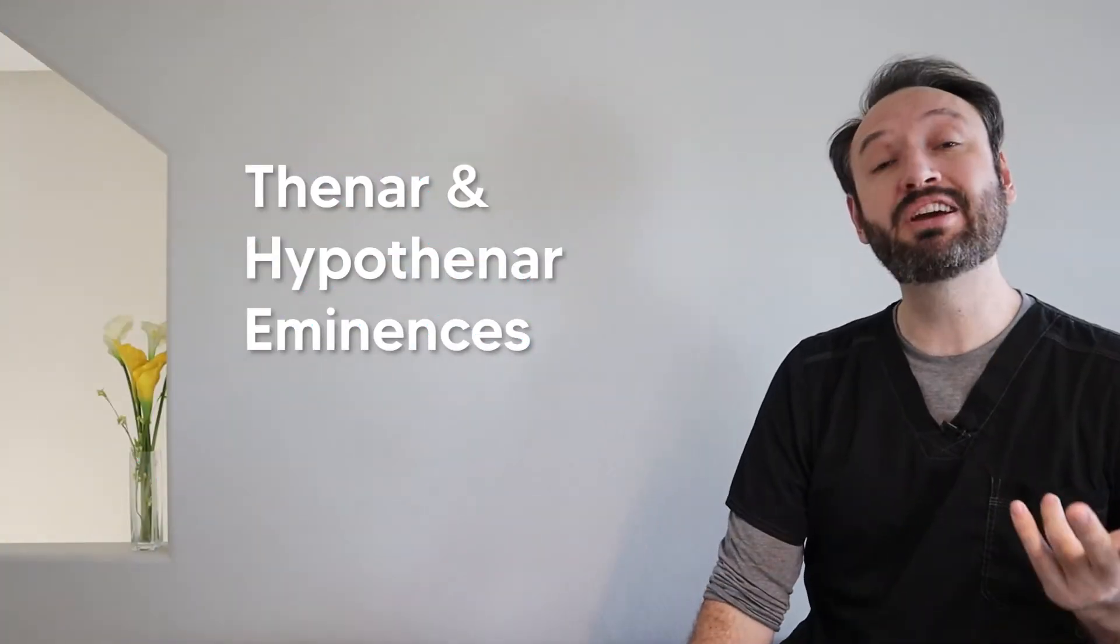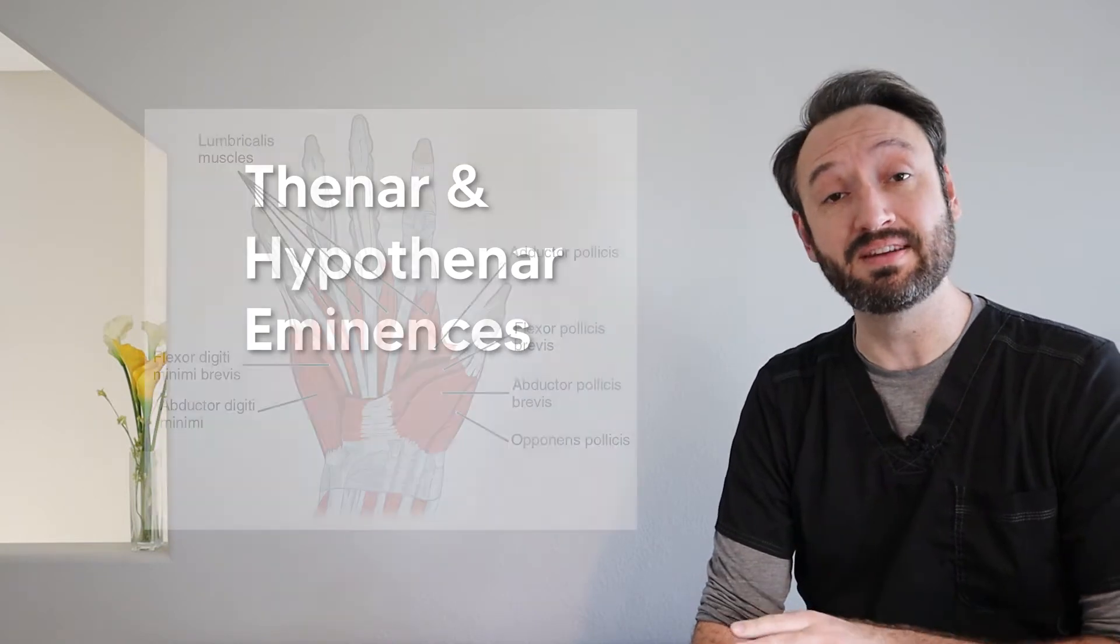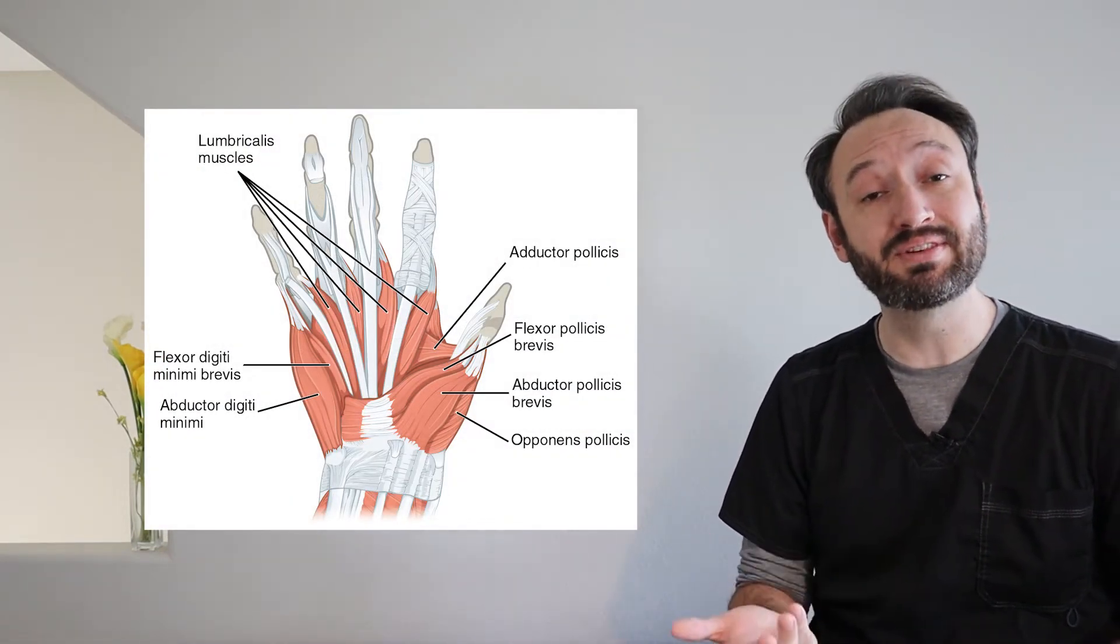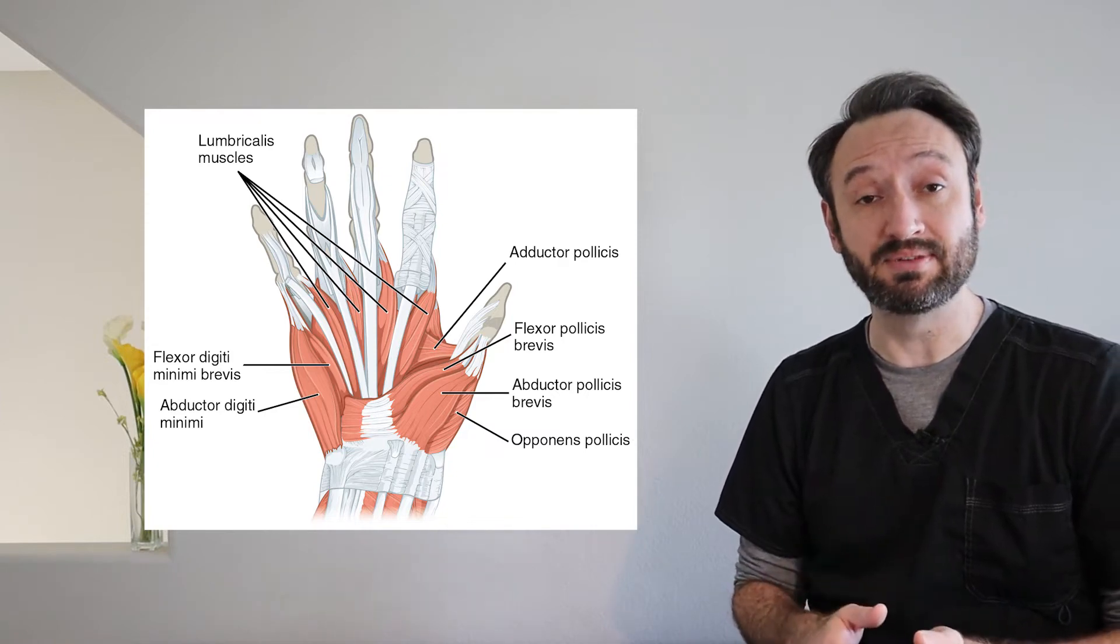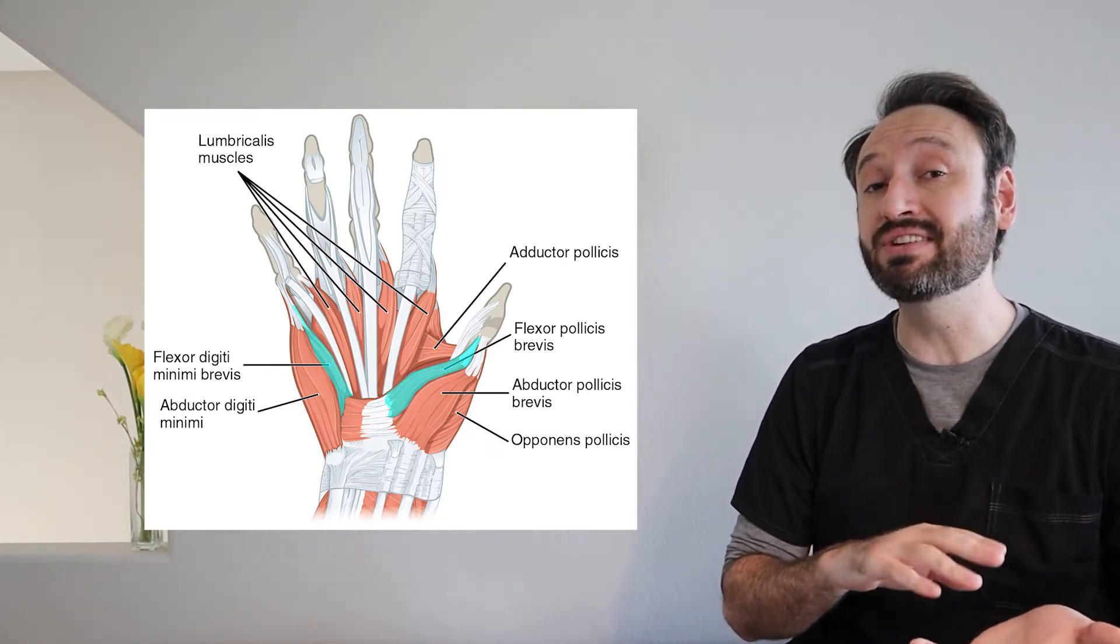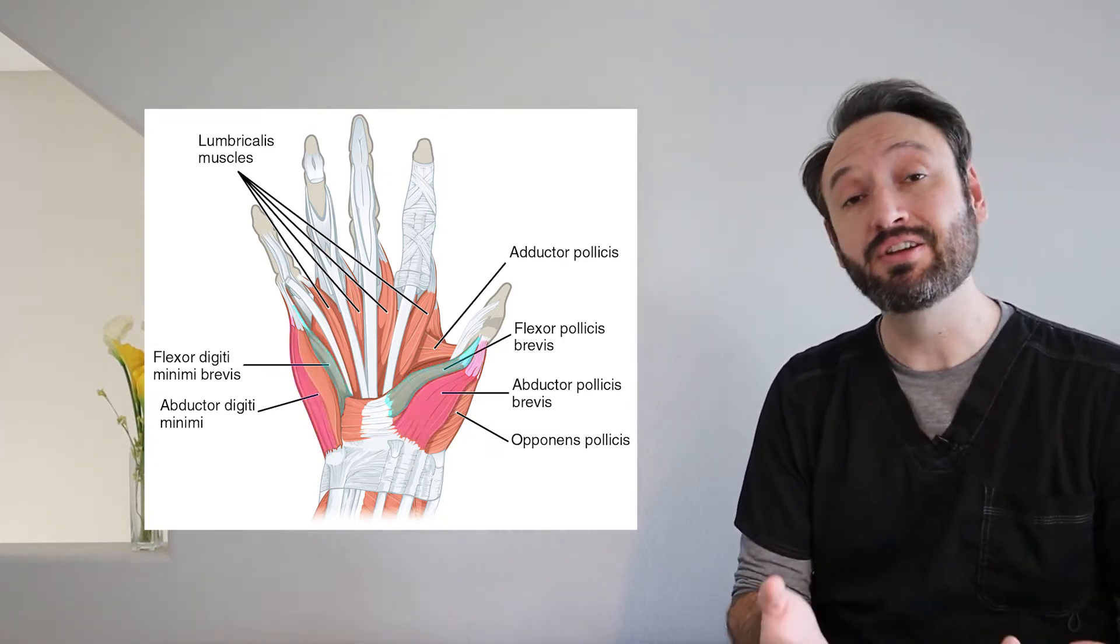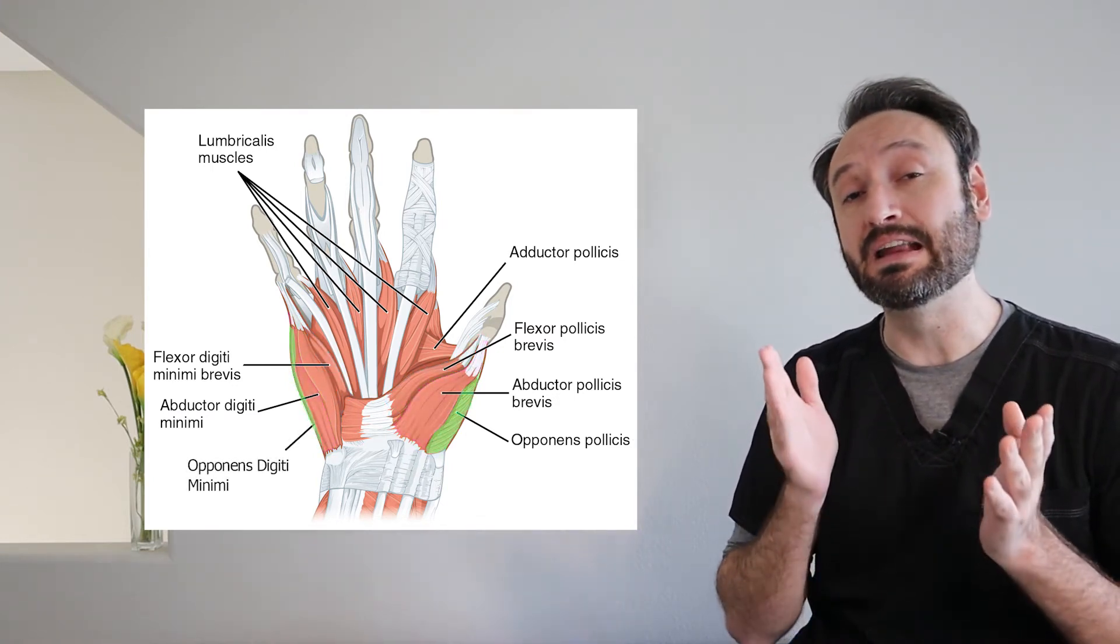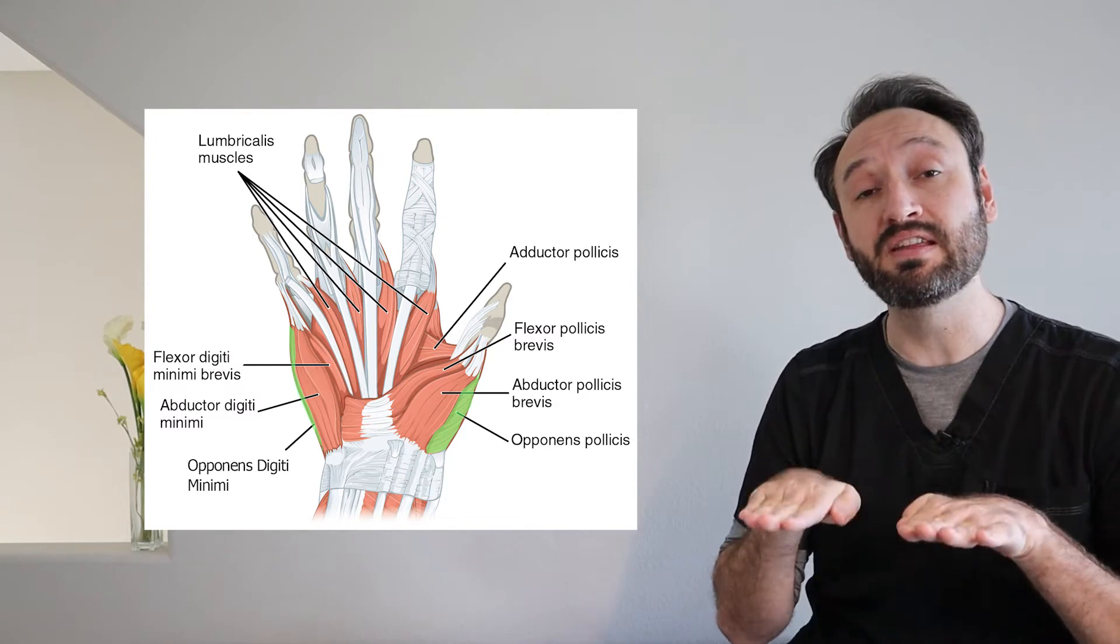For now, let's check out the muscles of the thenar and hypothenar eminences. The good news here is that these areas basically have the same kind of muscles, just with slightly different names. On each side, you'll find a flexor that's closer to the fingers, you'll find an abductor muscle that's closer to the edge of the hand, and then you'll find an opponens muscle that runs underneath the other two.